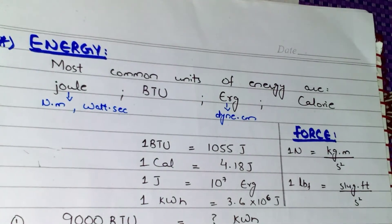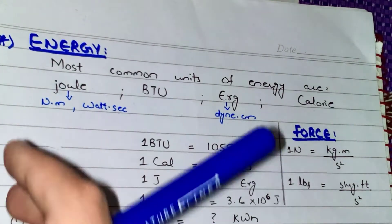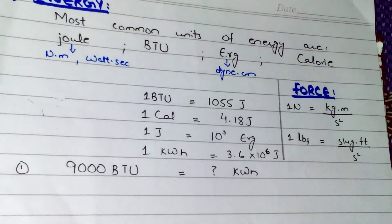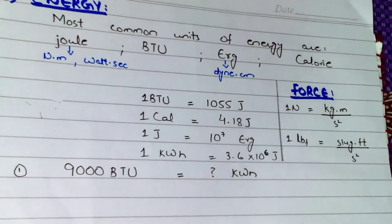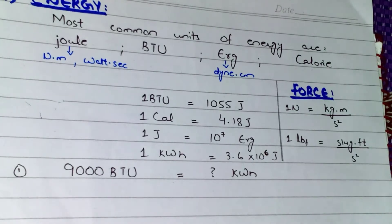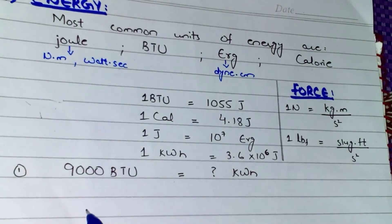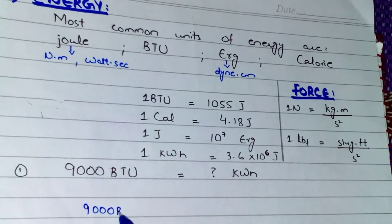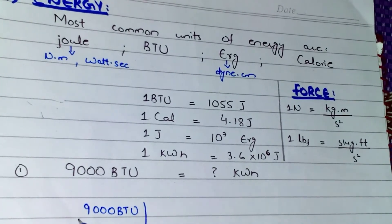Our first question is: how many kilowatt-hours are there in 9000 BTU? We have been given 9000 BTU, so our first step is to write it as 9000 BTU.